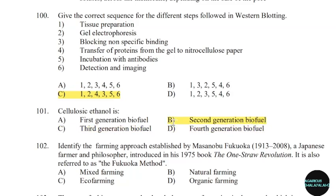102nd question: Identify the farming approach established by Masanobu Fukuoka, a Japanese farmer and philosopher, introduced in his 1975 book One Straw Revolution, also referred to as the Fukuoka method. Correct answer: Option B — Natural farming.